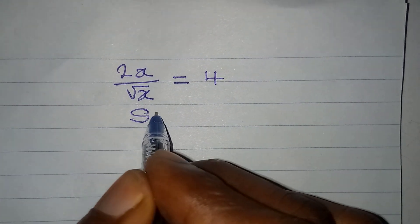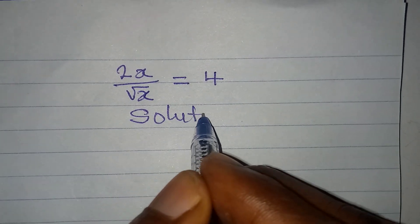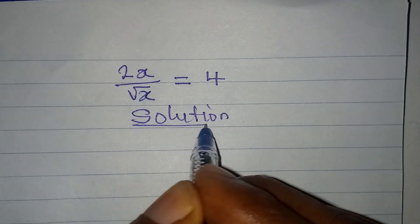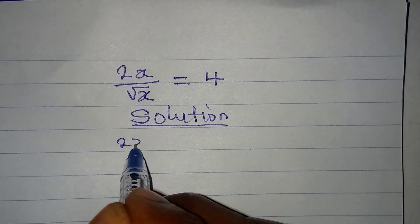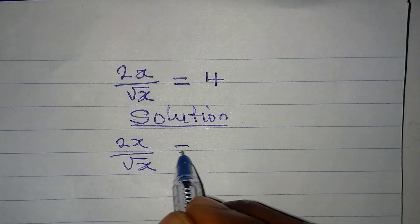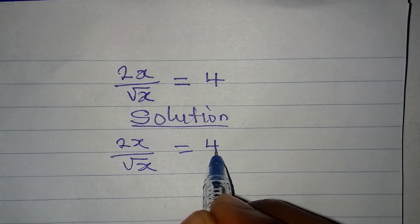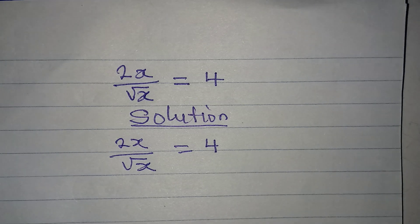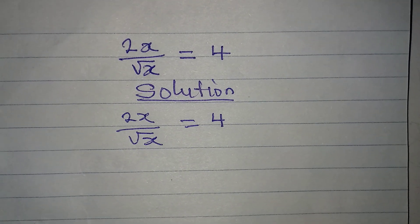Hello everyone, let's solve this problem very quickly. So we have 2x over square root of x to be equal to 4. This looks difficult, right? But is it? Let's deal with it.